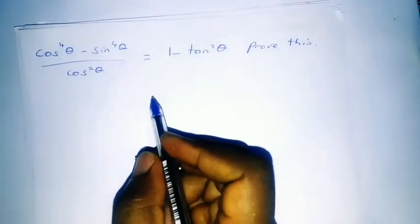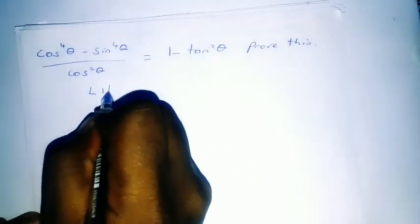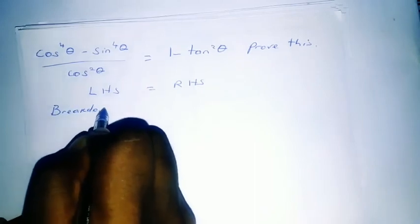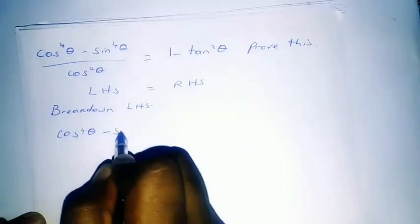When you have a question like this, you have to choose one side, because you have to prove the left hand side is equal to the right hand side. You look at which side is more complicated and can be broken down — that's the one you choose. Looking at this, we have cos to the fourth power, which is a little bit complicated, so we choose to break down the left hand side. The left hand side can be written as: (cos⁴θ − sin⁴θ) / cos²θ.